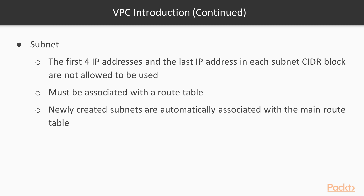A subnet must be associated with a route table — a table which specifies the allowed routes for outbound traffic leaving the subnet. We will see examples of what a route table looks like in practice when we go hands-on. Newly created subnets are automatically associated with the main route table from the VPC, but we can create different route tables and associate them with our subnets.